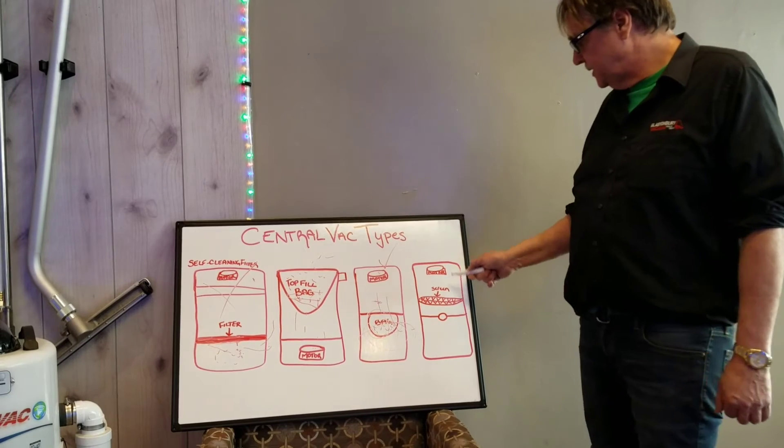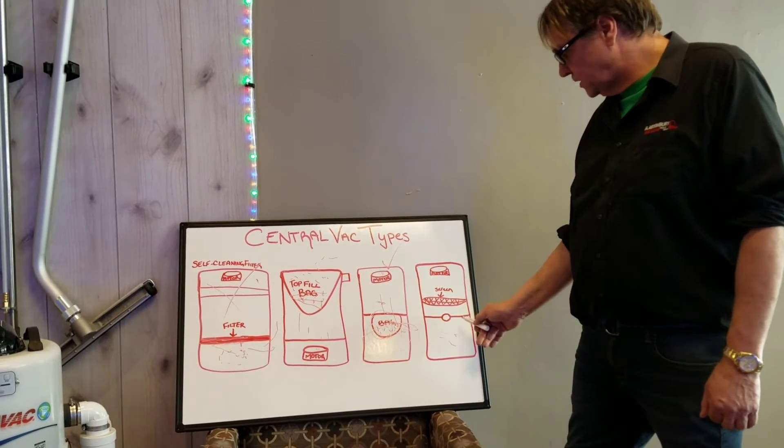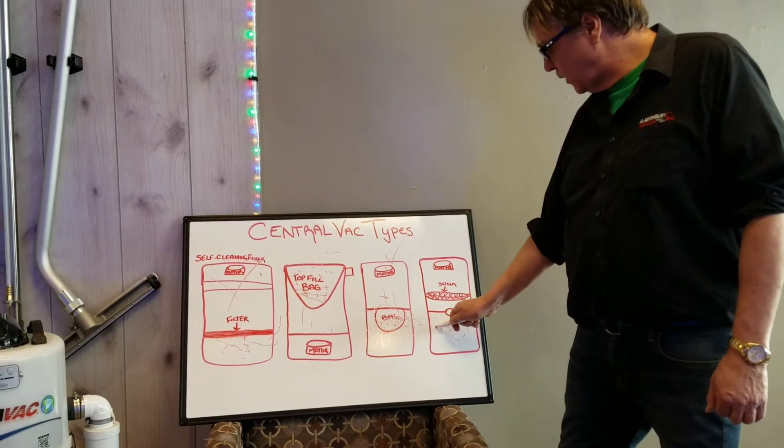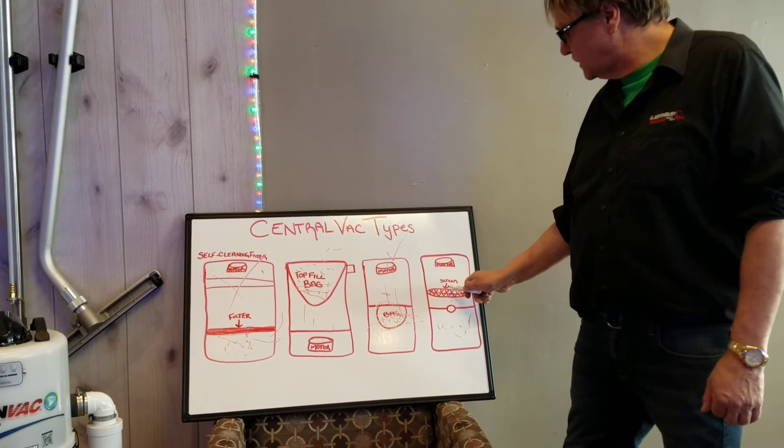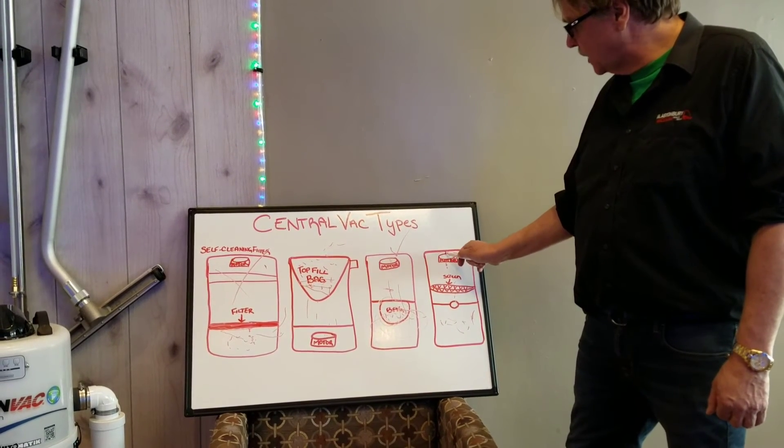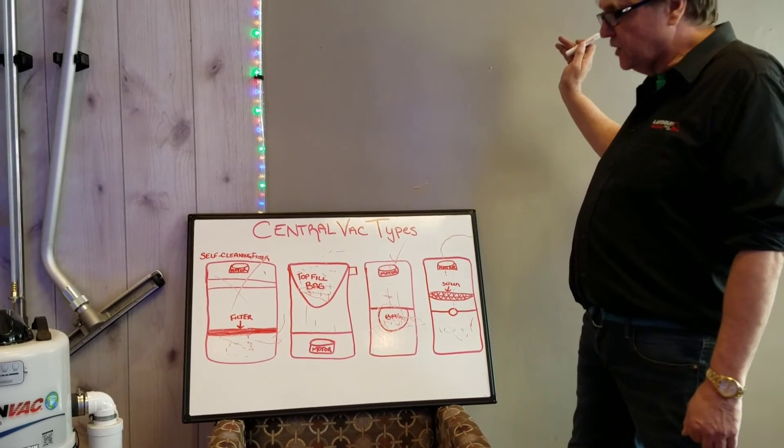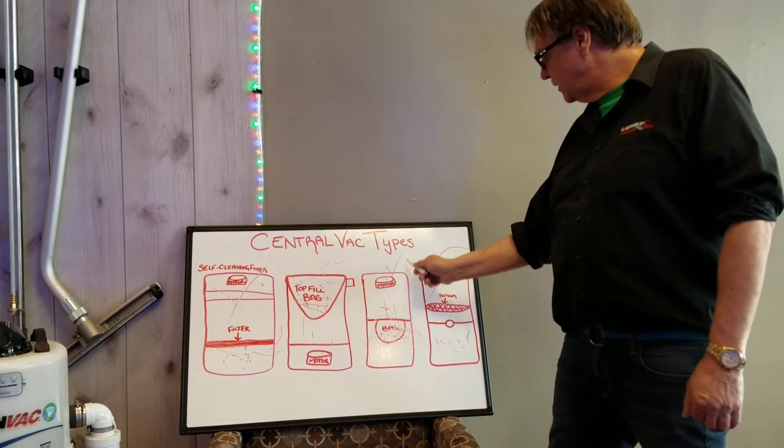Now the worst way to go is over here, because this is bagless and filterless. All you have is a metal screen up here, so the heavy dirt will go in here. The fine dirt gets pulled up through here. Some of it will get stuck to the screen, but the real fine dust goes up here, and then goes back out the exhaust of the motor, and gets either blown all over your cellar or blown all over the outside of your house. Another bad design.